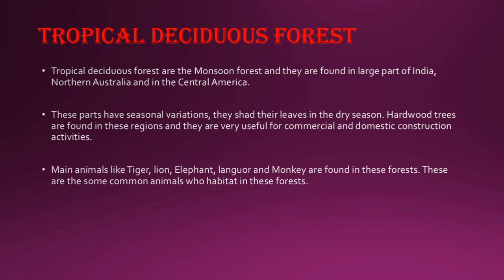The main animals found here include tiger, lion, elephant, langur, and monkey. These are some common animals who generally live in tropical deciduous forests. Those are the basic features of this forest type.